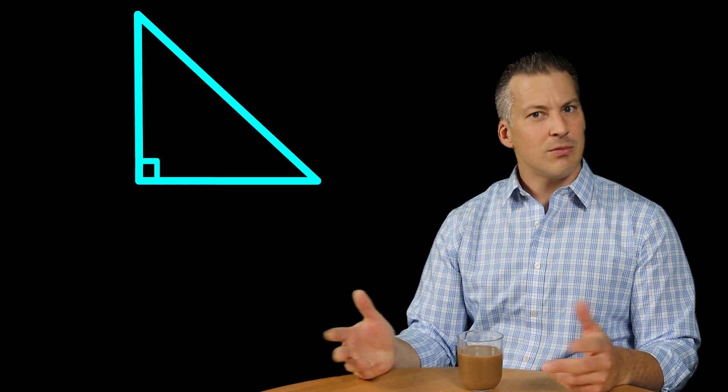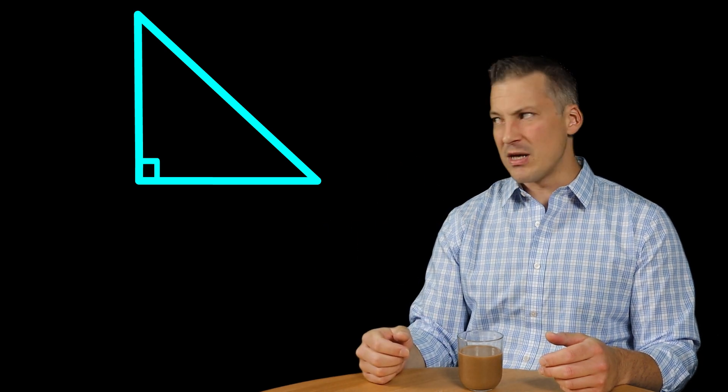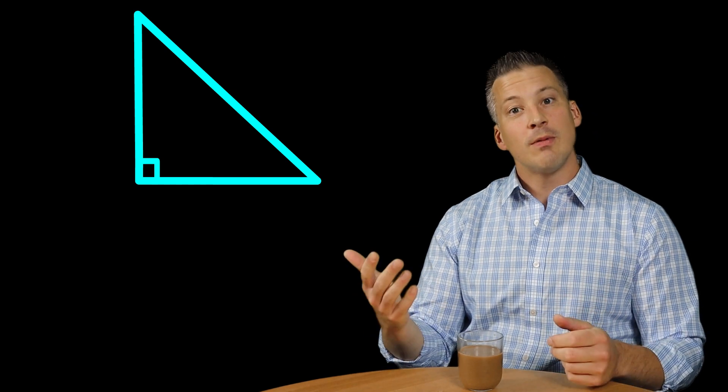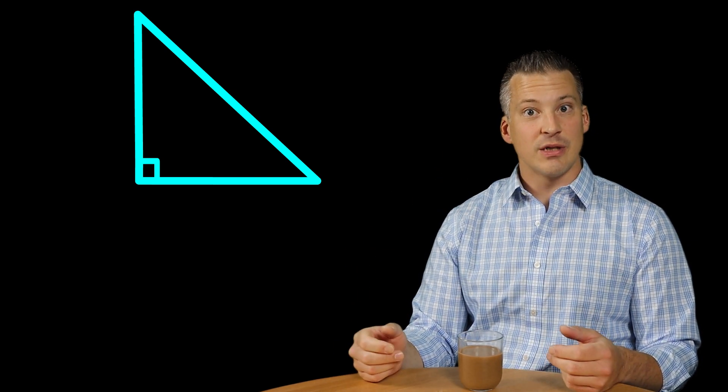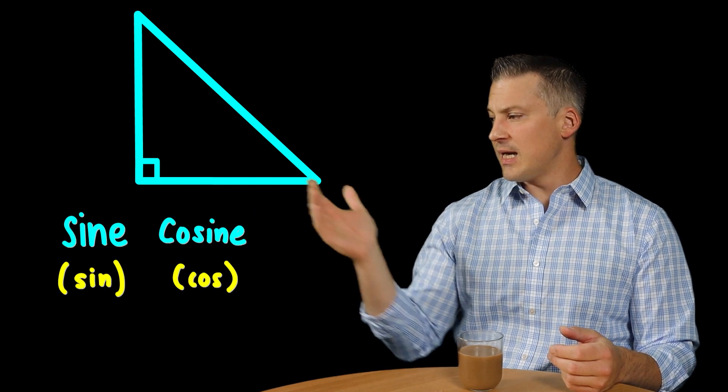So what we're going to talk about first is trigonometry. And remember, this is all based off of right triangles. So here's a right triangle. Now, what is a right triangle? Well, it's simply a triangle that one angle has a measure of 90 degrees, a right angle. So what we need to know is the three important formulas of trigonometry here: sine, cosine, and tangent.